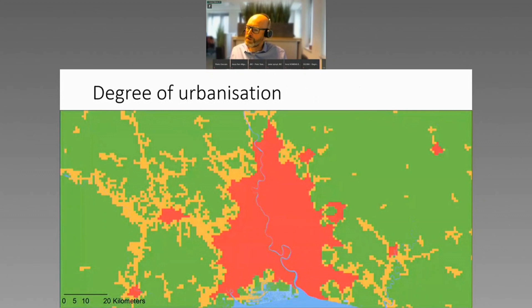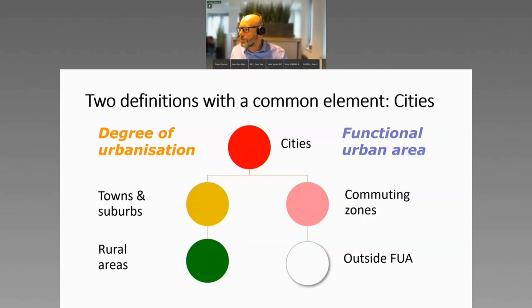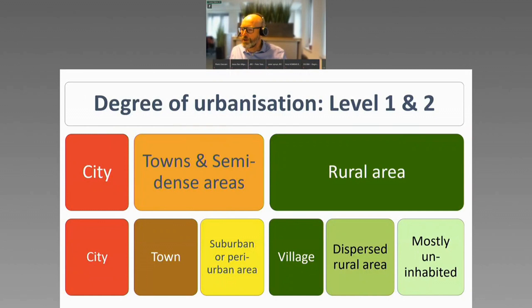This is what we do with the degree of urbanization. The red are cities. The orange are towns in semi-dense areas, which you can see on the outskirts of all the cities. And the green are rural areas. We also have a metropolitan or functional area definition, where we create commuting zones around cities, though we can't measure commuting with remote sensing yet. Together with FAO, we created a second level of degree of urbanization, splitting rural areas into villages, dispersed rural, and mostly uninhabited, and splitting towns from semi-dense areas into suburban or peri-urban areas.